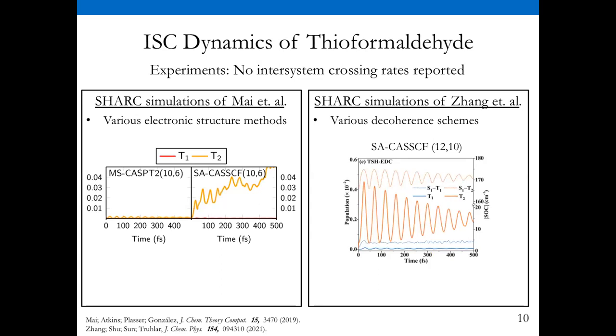I want to briefly go over two papers that have looked at SHARC simulations of thioformaldehyde. The first one by Maya et al. from Leticia Gonzalez's group looked at effects of various electronic structure methods, focusing on multi-reference methods. They had MS-CASPT2 dynamics at a 10-6 active space, and within 500 femtoseconds they saw no transition into the T2 state, while SA-CASSCF saw about 5% transition into T2. They did thorough analysis and their main conclusion was that MS-CASPT2 gave the right answer for the right reasons. When we look at MCPDFT results, we want to see results in agreement with MS-CASPT2.